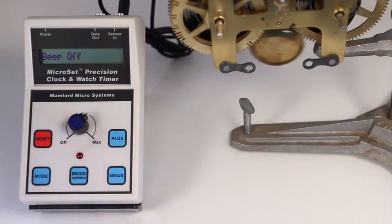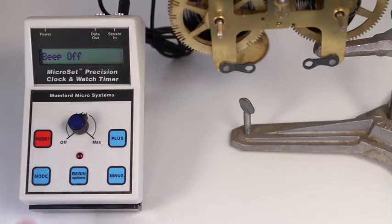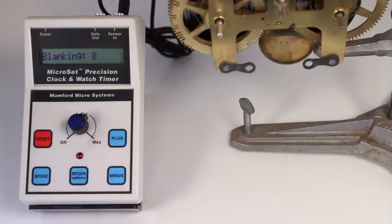The first setting in the configuration mode is to turn the beep on or off. Press the mode key to skip this setting and press mode again to skip the next setting as well. The LCD screen will then say blanking followed by a number.